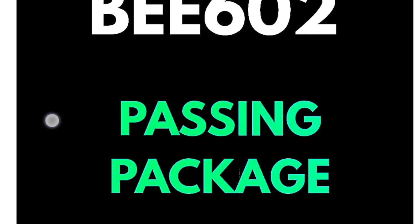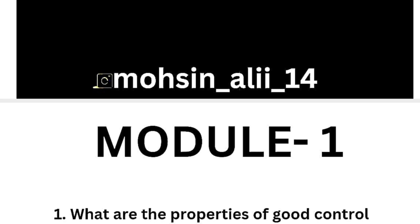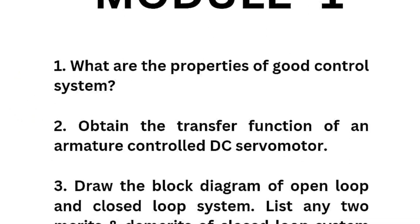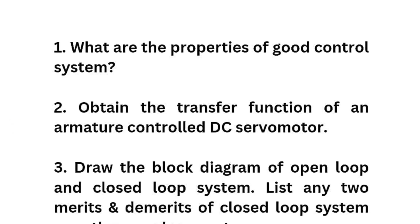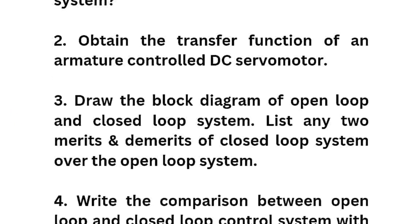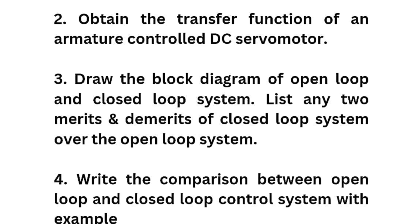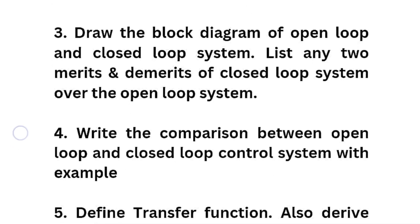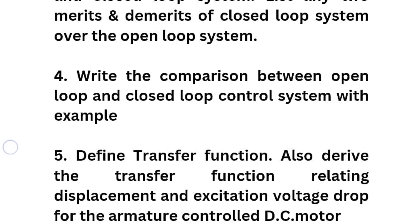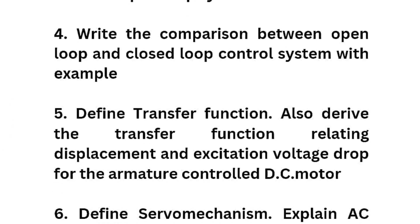Coming to the first module, which is a passing module, you have to go through theoretical concepts like: what are the properties of a good control system, obtain the transfer function of an armature-controlled DC servo motor, draw the block diagram of open loop and closed loop systems, and list any two merits and demerits of closed loop or open loop systems. Also write the comparison between open loop and closed loop control systems, which may be a six-marks question.